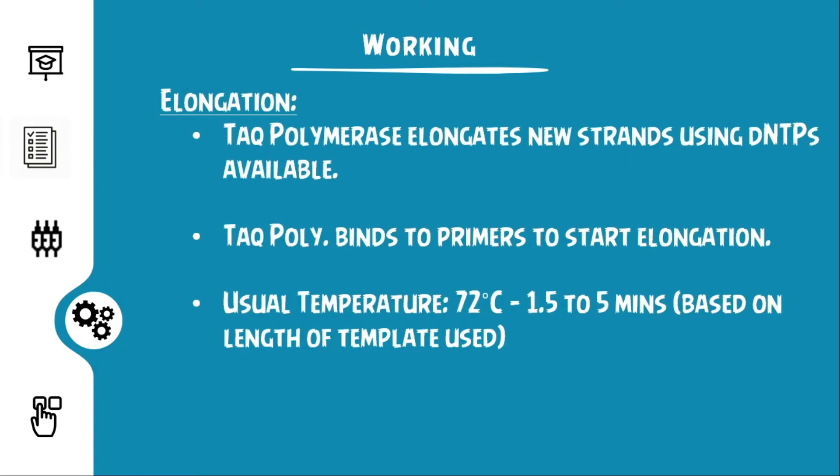The final step is elongation of the new strand. The polymerase binds to the primers and elongates the new strand using the dNTPs available. During synthesis, it moves from the 5 prime to the 3 prime direction. This step usually takes place at a temperature of 72°C and for a duration of 1.5 to 5 minutes, depending on the length of our gene. This temperature is chosen because Taq polymerase activity is at its highest.